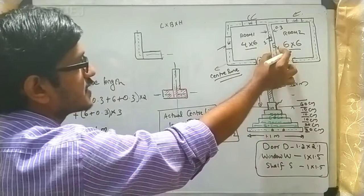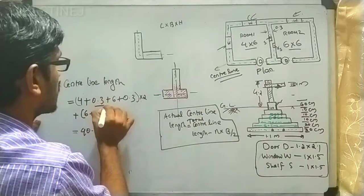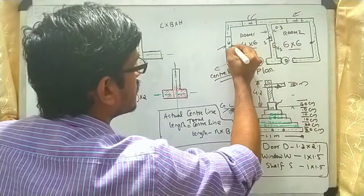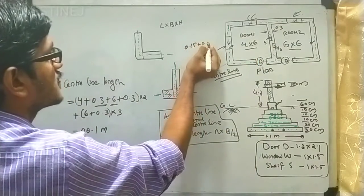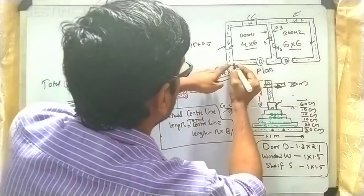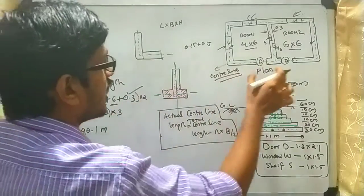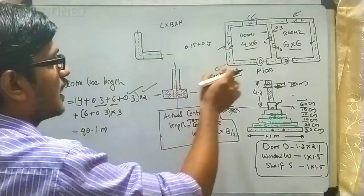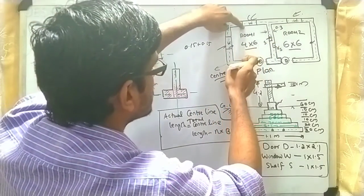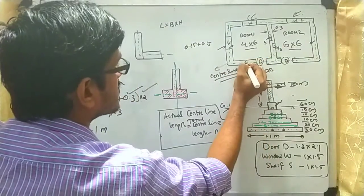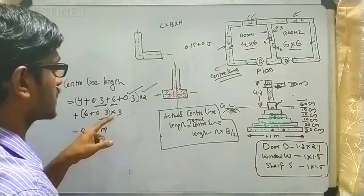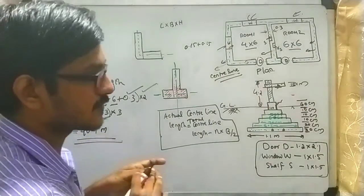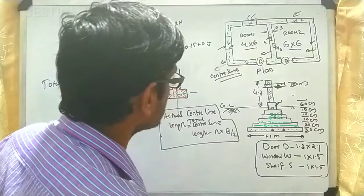We include the wall thickness of 0.3, so we have 4 plus 0.3, then add 6, and add half distances of 0.15 plus 0.15 equals 0.3 on each side. This length is multiplied by 2 since it acts on two axes. For the short wall of 6 meters, we add 0.15 on each side giving 6 plus 0.3, and this acts three times. Summing all values gives a total centerline length of 14.1 meters.